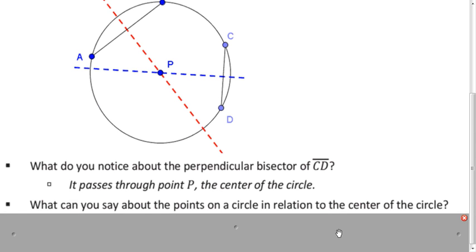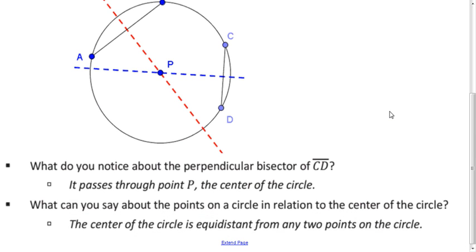Well how can we show that that's always the case? Well what do we know about the points on a circle? How are they related to the center? Well by definition of a circle, we know they're all equidistant from the center. We could draw radii from the center to the points, and those radii are all going to have the same measure.